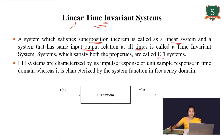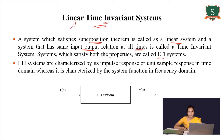So what do you mean by linear? Suppose you have two different sequences, x1(n) and x2(n), and their corresponding outputs are y1(n) and y2(n). Now if I combine those inputs x1(n) and x2(n) and use them as input to the same system, the output should be y1(n) plus y2(n) — a combination of the individual responses.